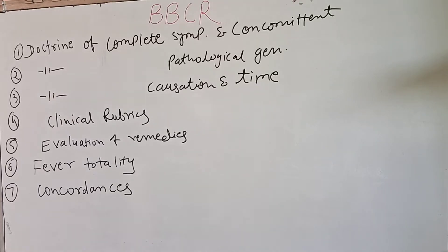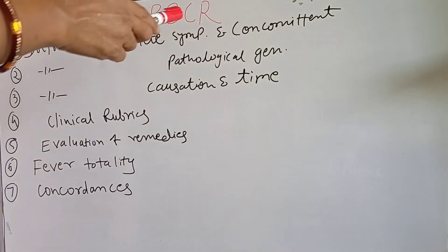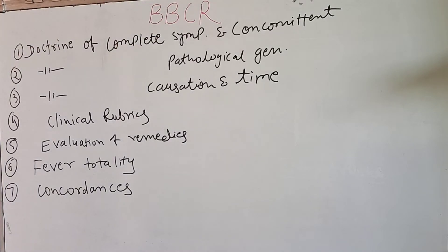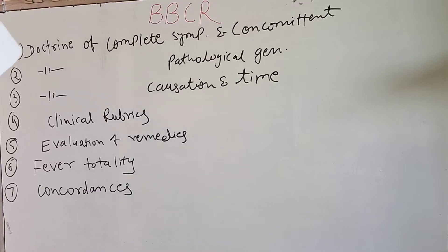The second fundamental concept is the pathological general. This doesn't mean that we prescribe on pathology. It means that if more than two parts show a similar kind of pathology, it shows the behavior of the whole constitution, which is important to understand the whole individual. For example: dropsy, hemorrhagic tendency, offensiveness, suppuration.